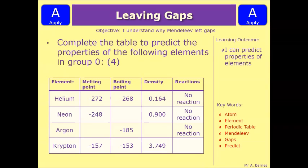Let's have a look at a couple of questions. This one says complete the table to predict the properties of the following elements in group 0. So you need to look at the melting points, boiling points, density, and the reactions above and below and predict what the properties are. Pause the video, have a go, and we'll see if you were right.